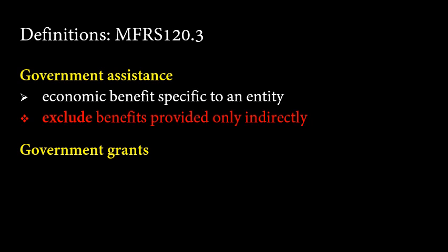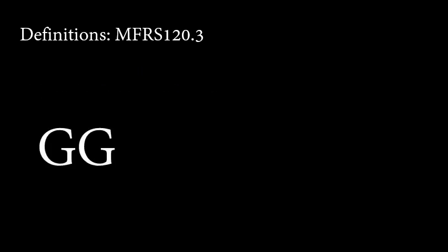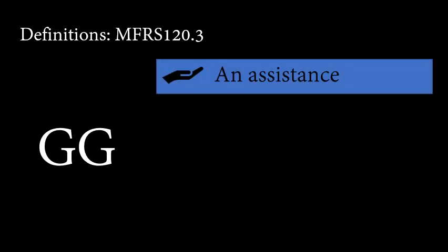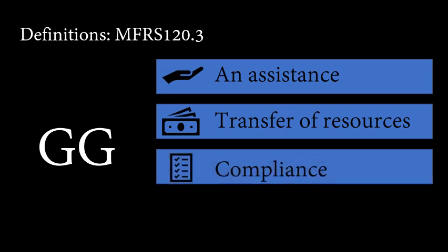Government grants are assistance by government in the form of transfers of resources to an entity in return for past or future compliance with certain conditions relating to the operating activities of the entity. Based on this definition, there are a few things to highlight. First, government grant is part of government assistance. Second, it must be in terms of transfer of resources, be it cash or assets or other resources. Third, the transfer of resources is due to the entity complying with conditions given by the government in relation to the entity's operation.